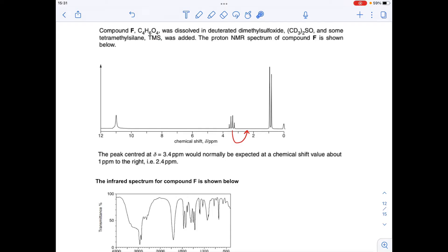TMS is obviously the standard or the reference, so it's causing this little peak at delta 0 ppm. We've got the proton NMR spectrum and this annoying piece of information that this signal here at 3.4 ppm should actually be 1 ppm to the right. So I've drawn that there just so I don't forget that should actually be there.